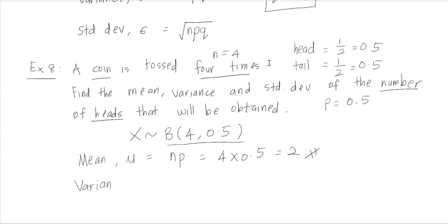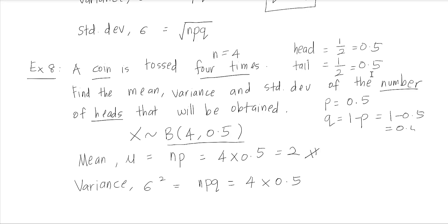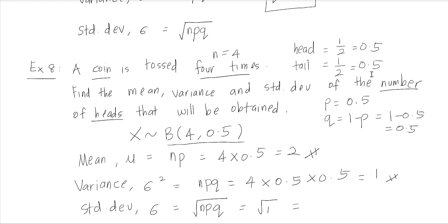Next, the variance formula for the binomial distribution is n times p times q. With p equal to 0.5, we get q equals 1 minus p equals 1 minus 0.5 equals 0.5. So the variance equals 4 times 0.5 times 0.5 equals 1. Finally, the standard deviation is the square root of the variance: the square root of 1 equals 1. This is how we calculate the mean, variance, and standard deviation from the binomial distribution.